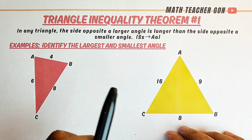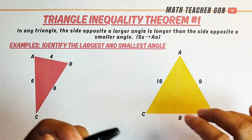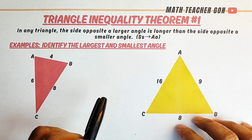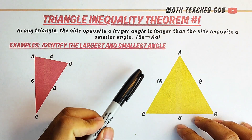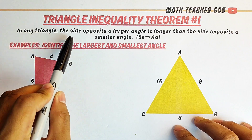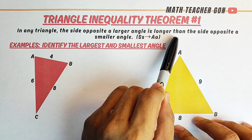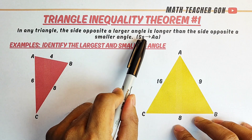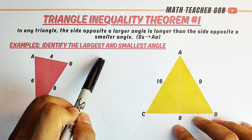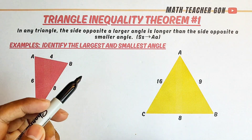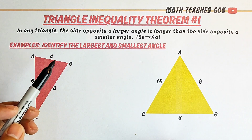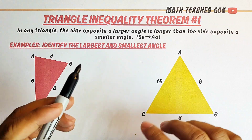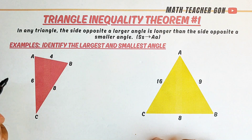Hi guys, it's me Teacher Gone. In today's video we will talk about the triangle inequality theorems. For this entire video we will talk about the three different inequality theorems about triangles. Let's start with Theorem Number One: in any triangle, the side opposite a larger angle is longer than the side opposite the smaller angle.